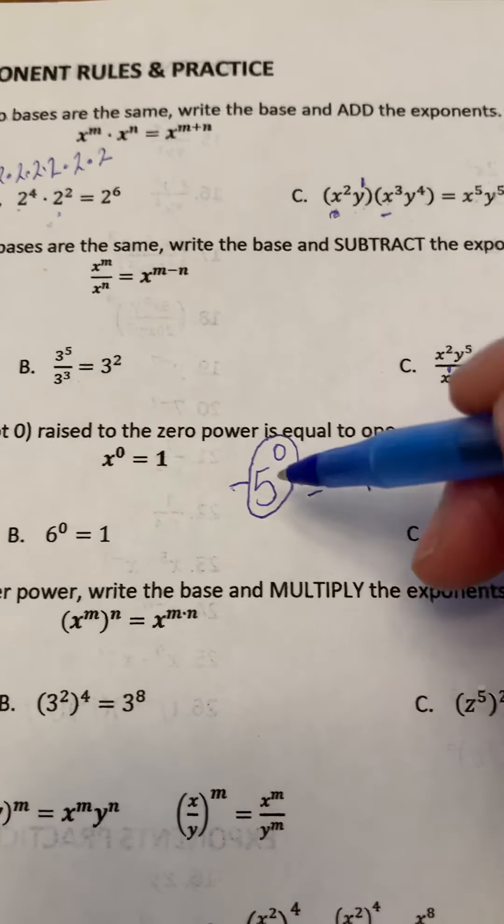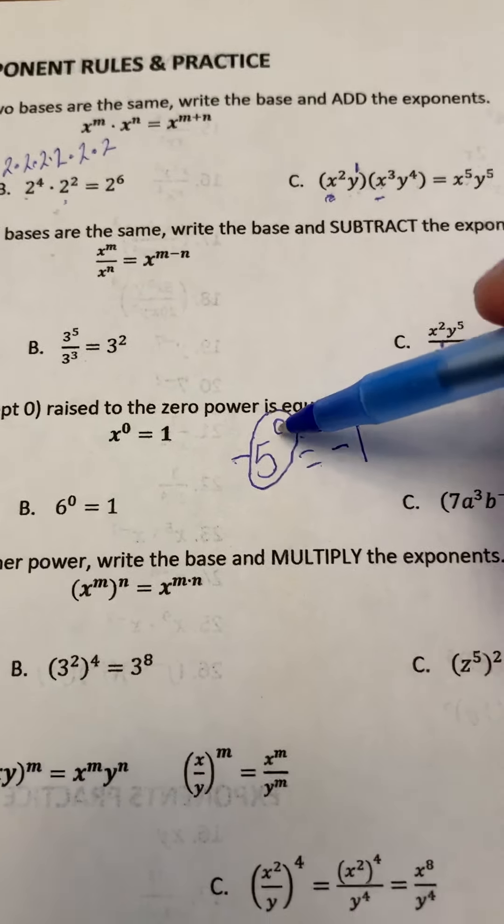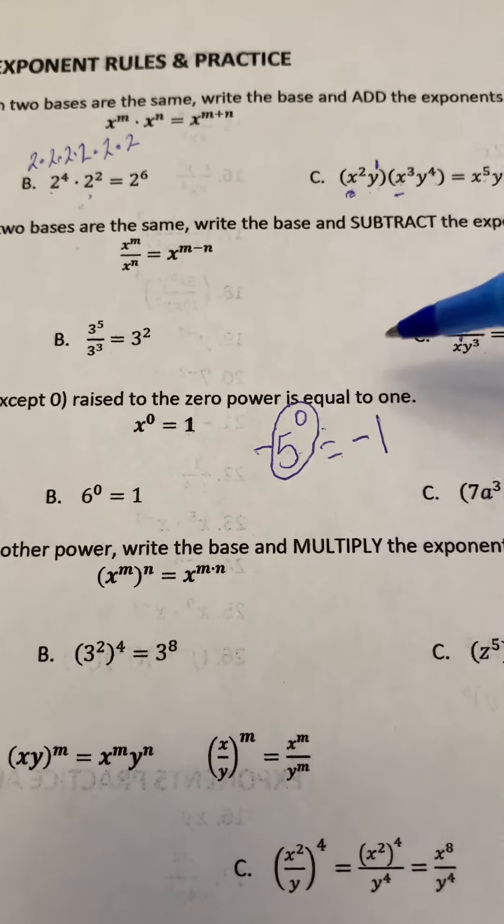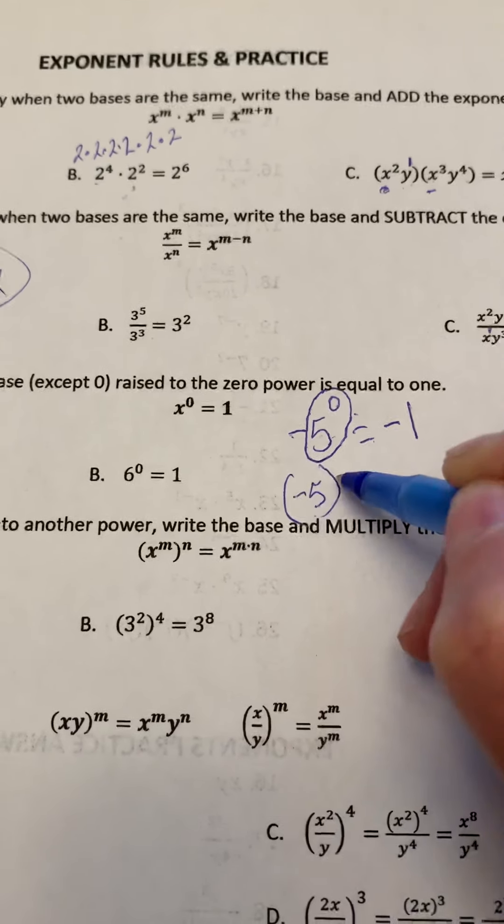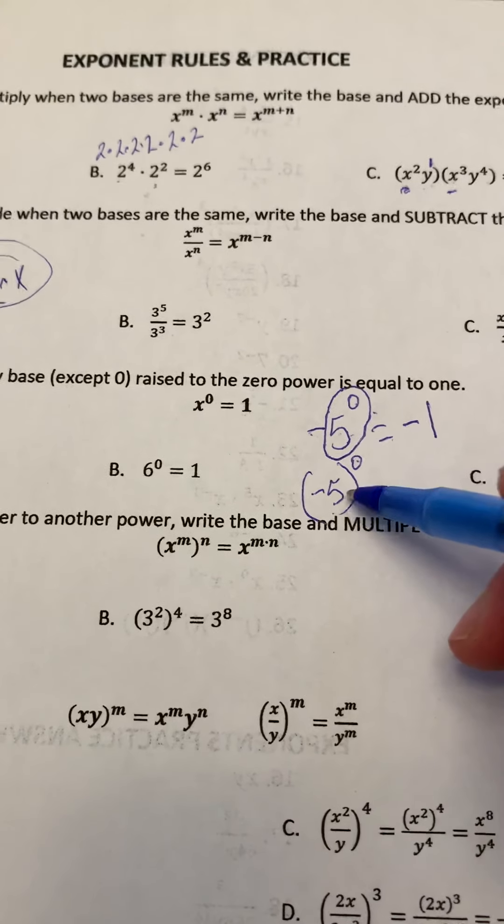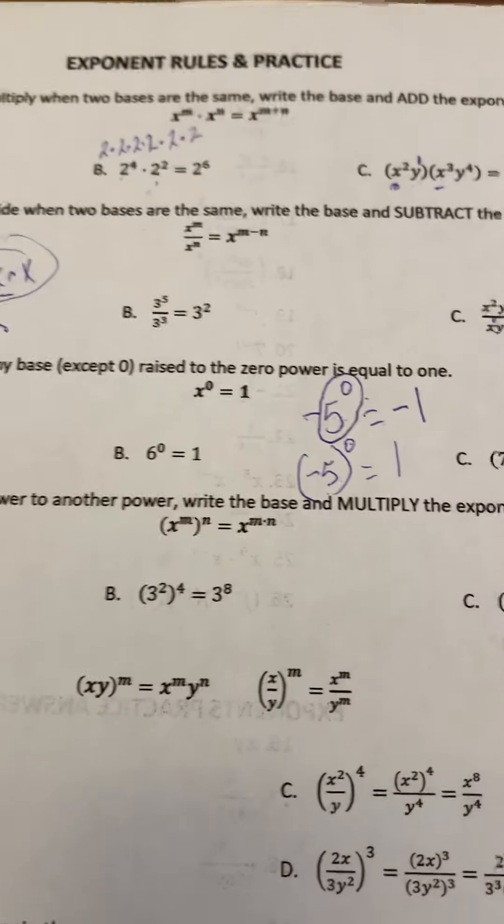I think in elementary school they talk about the exponent on the shoulder of the base. So this isn't included. The only way that that could become a positive 1 is if we said that the negative 5 was in brackets. Then the whole thing is being raised to the power of 0, and that would be 1.